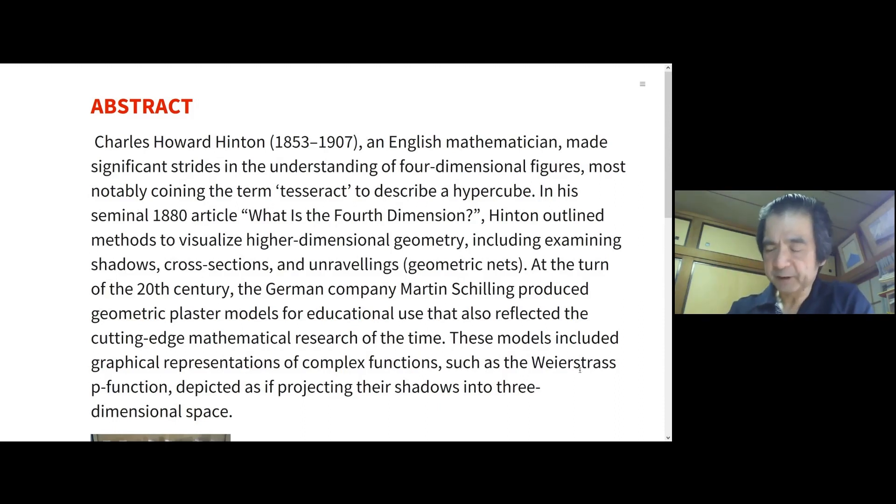I'd like to briefly review the history of four-dimensional visualization. The first man who may have been able to see the fourth dimension was Charles Howard Hinton. His invention, Hinton's cube, a hypercube or tesseract. His contribution was popularizing higher dimensional figures using three methods: by examining their shadows, their cross sections, and their geometrical nets. This is very important.